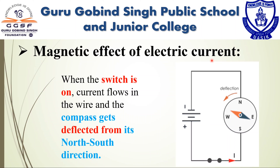When a compass is brought near a current-carrying conductor, the needle of the compass gets deflected because of the flow of electricity. This shows that electric current produces a magnetic effect.